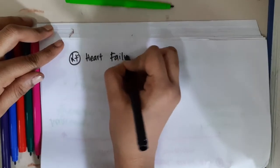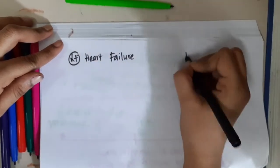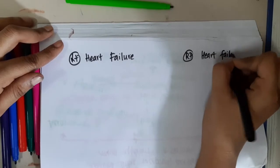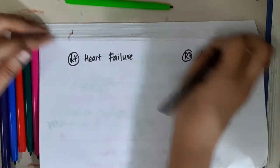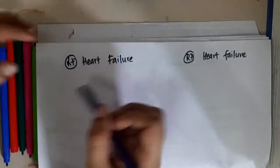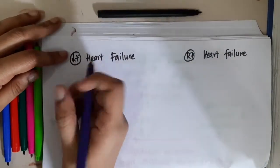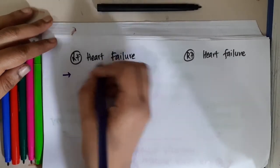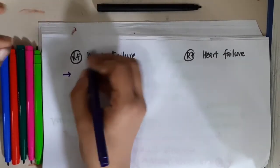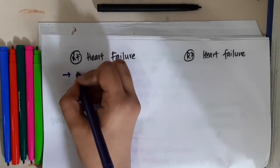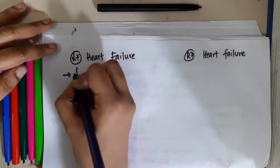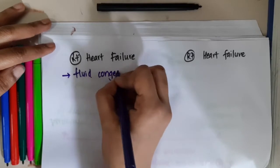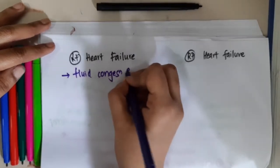We will take some differences between right heart failure and left heart failure. In left heart failure, the problem is in the left heart — a failure of left heart. As a result, there will be fluid congestion seen in the lungs.